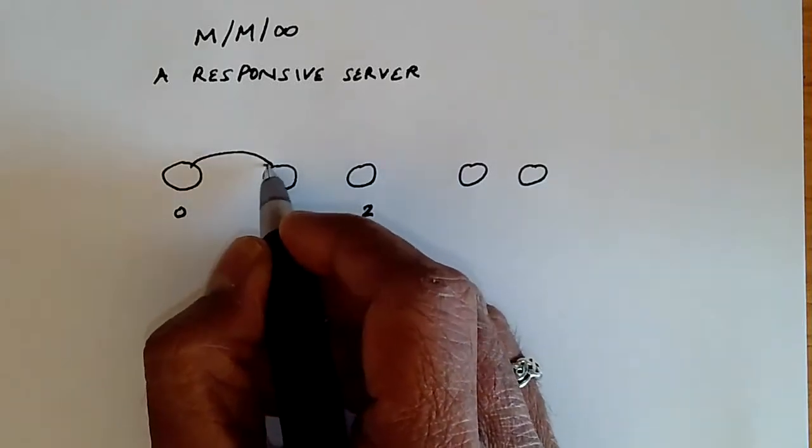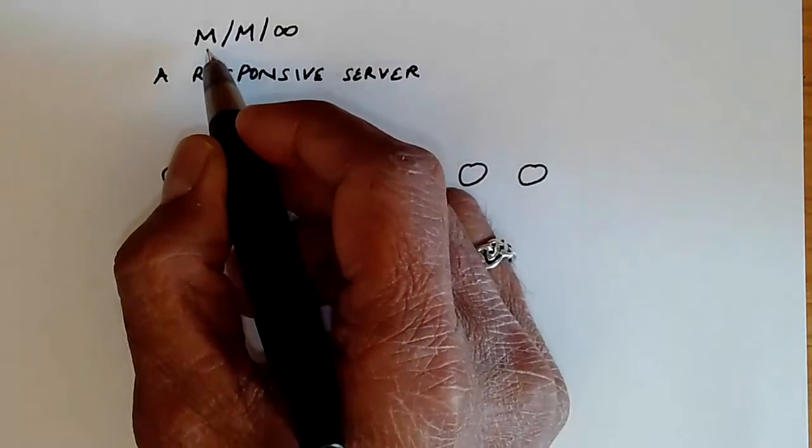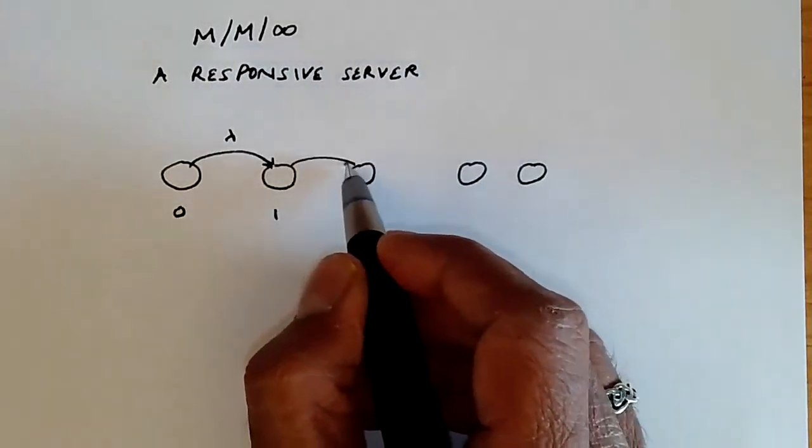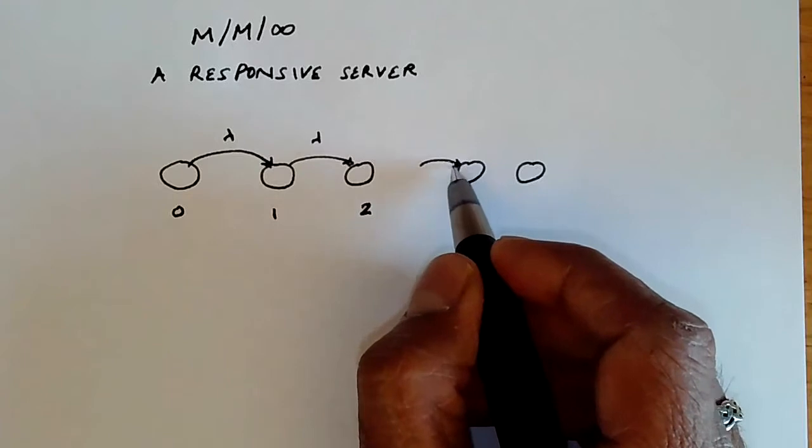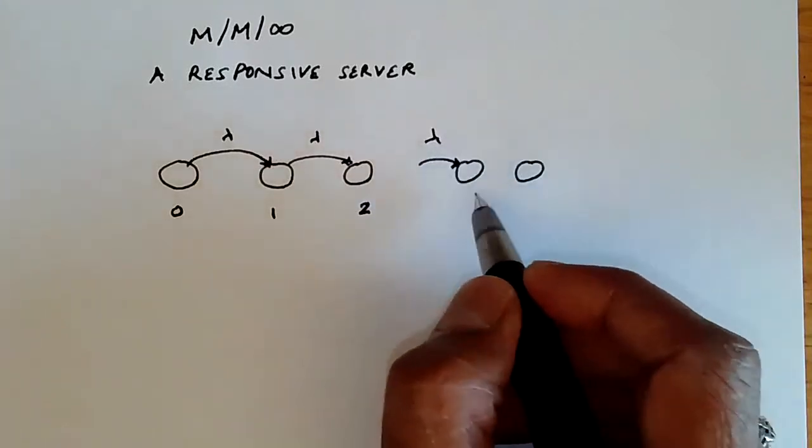And now customers arrive at the rate lambda because it's M over here means it's a lambda. It's always going to be at the rate of lambda. And let's say that's state j.